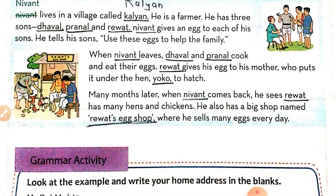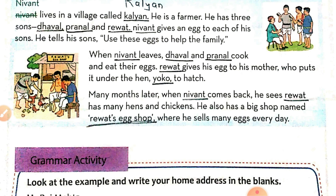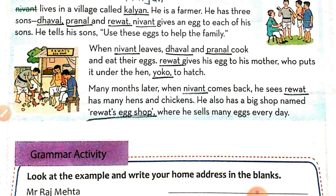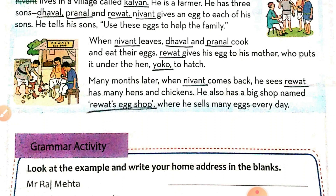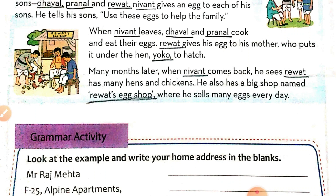Niwanth gives each son one egg and leaves. Dhaval and Pranal boil and eat their eggs. Revat gives his egg to his mother, who puts it under the hen Yoko to hatch. Many months later, when Niwanth comes back, he sees that Revat has many hens and chickens. He also has a big shop named 'Revat's Egg Shop,' where he sells many eggs every day.